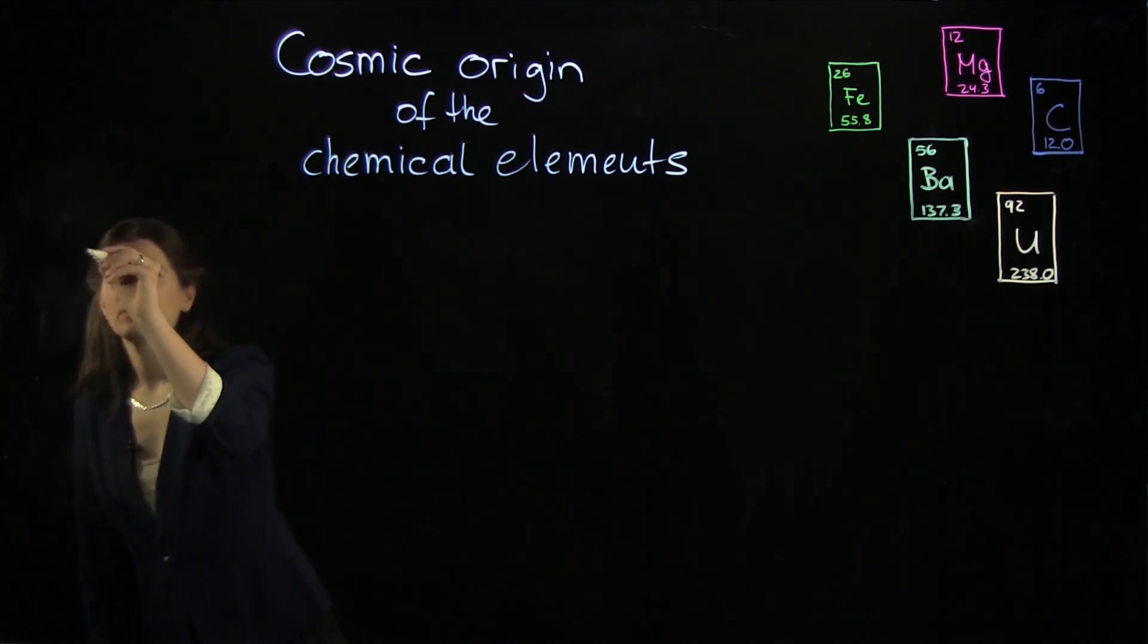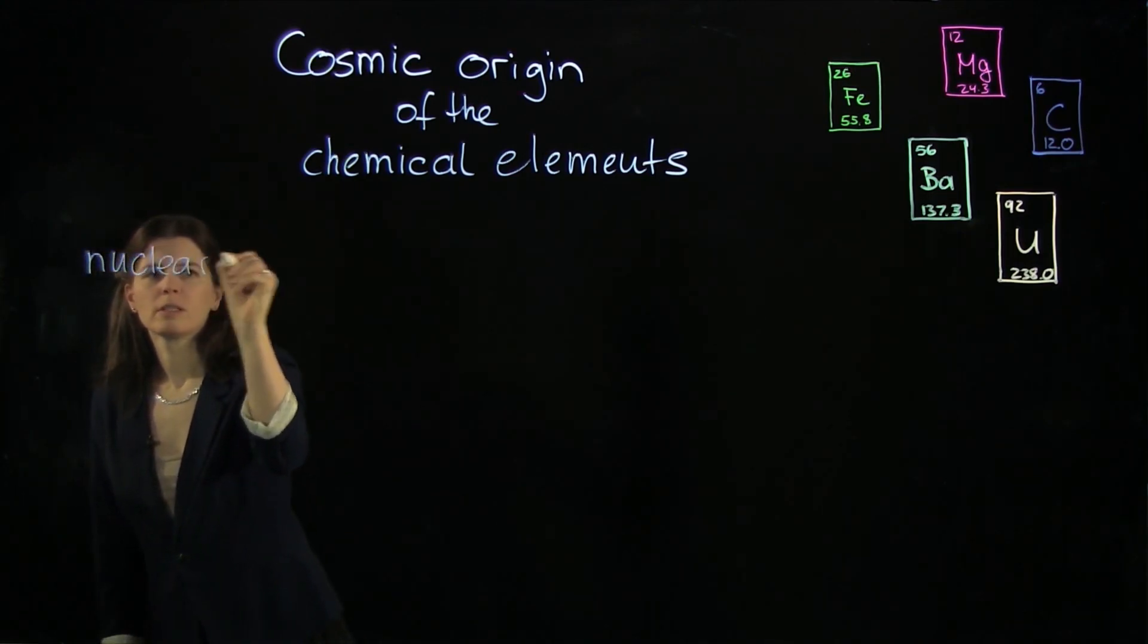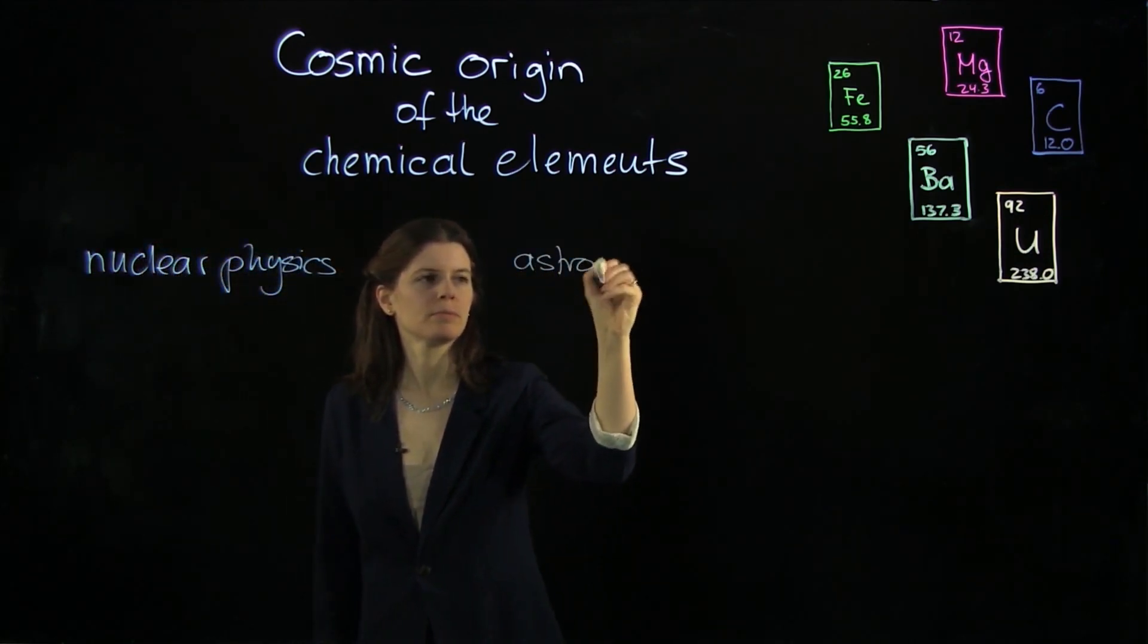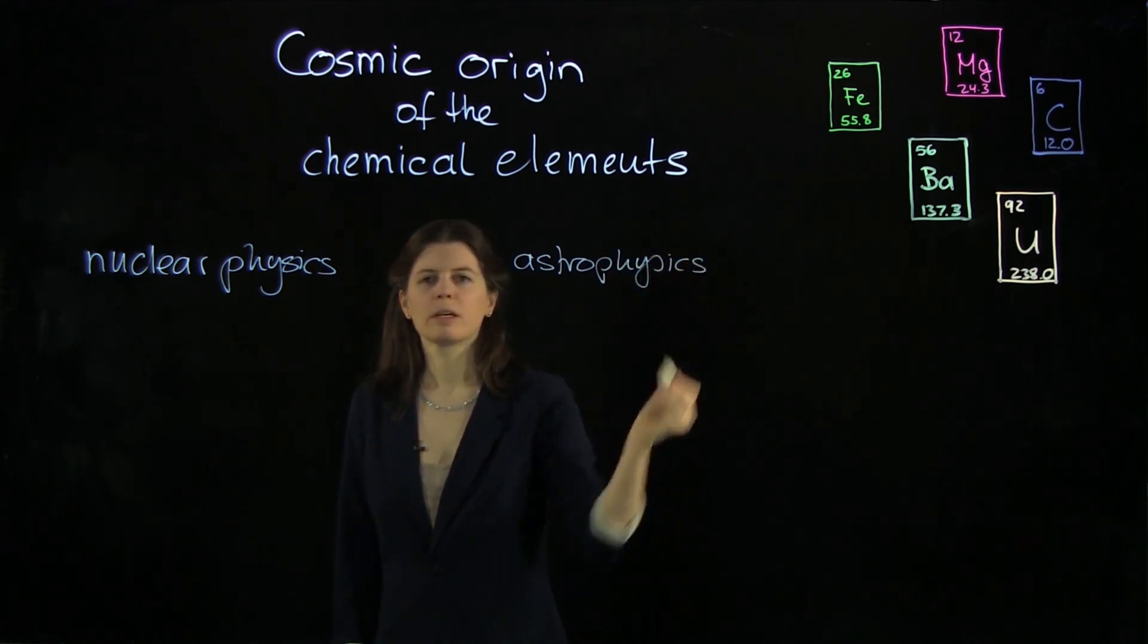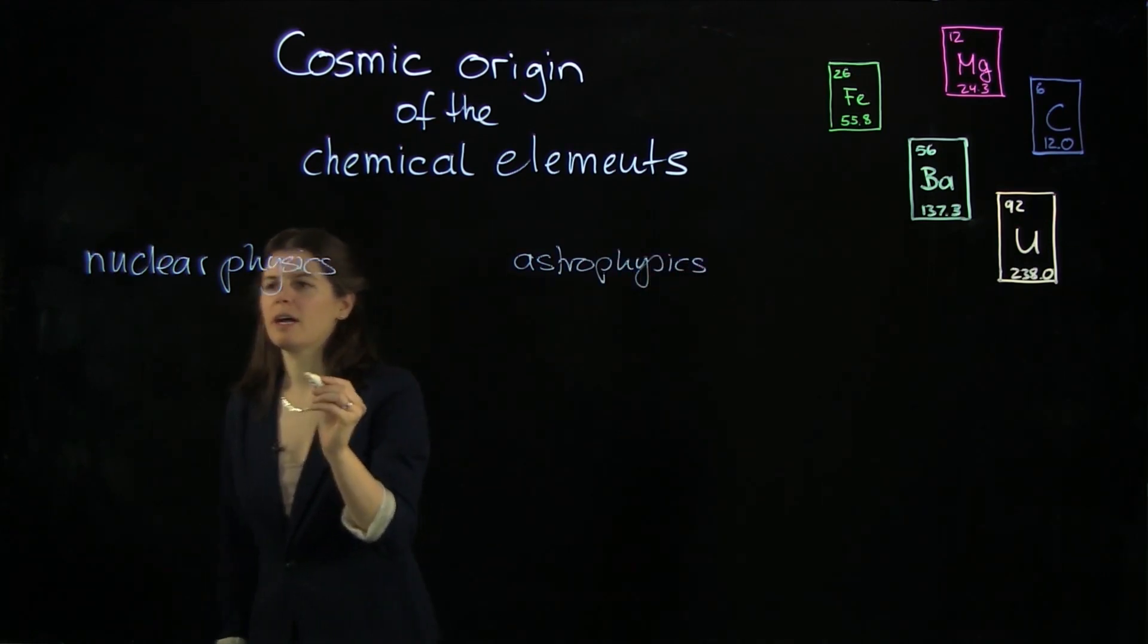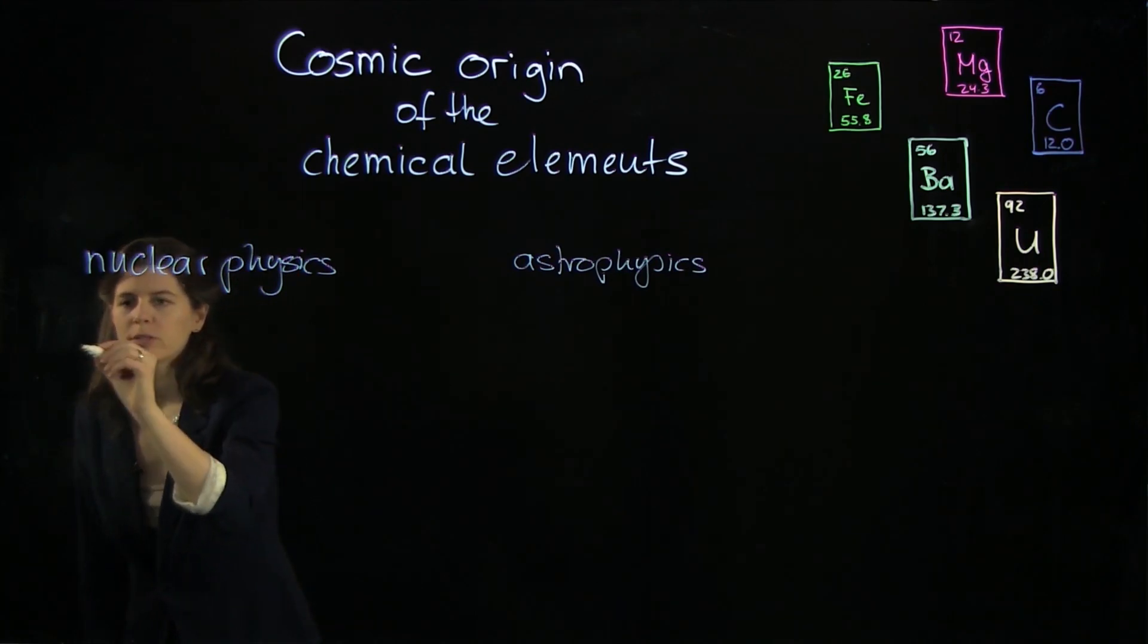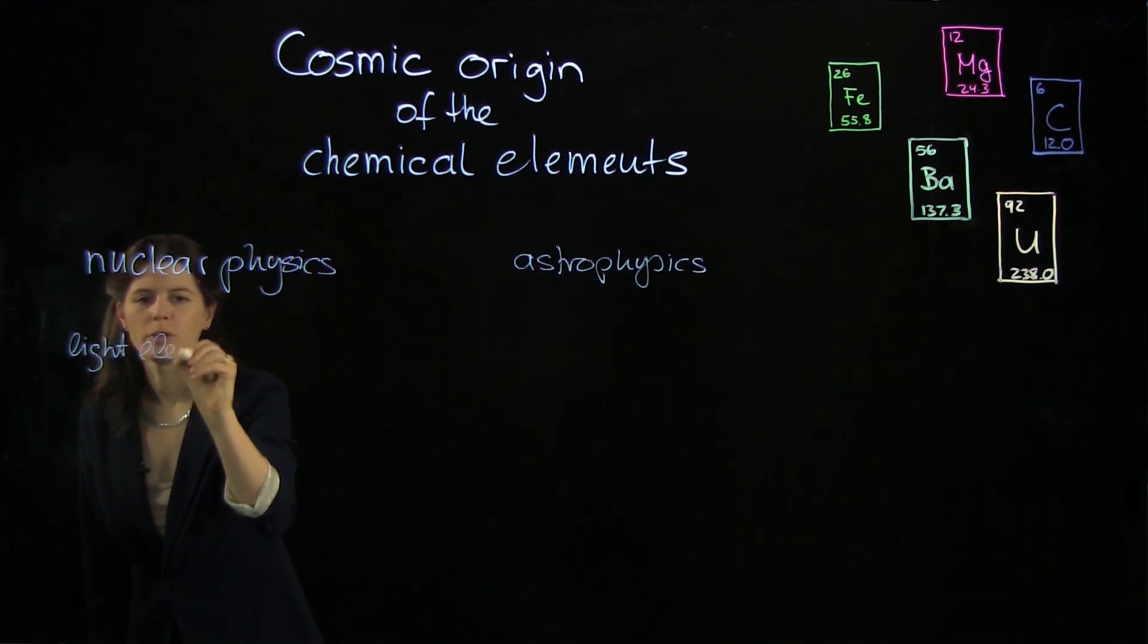We have a nuclear physics part and we have astrophysics. On the nuclear physics side, we have two things that we want to consider or learn about, namely how the light elements are formed - light elements up to iron.